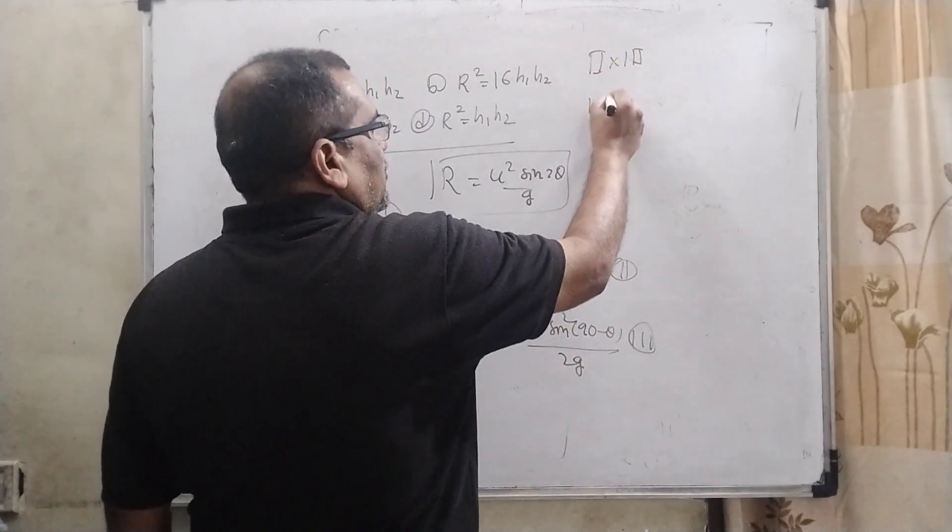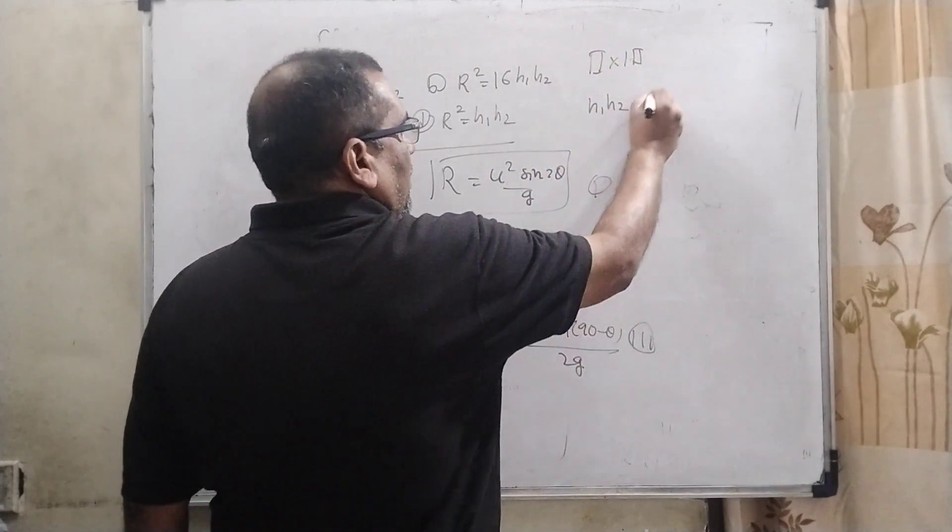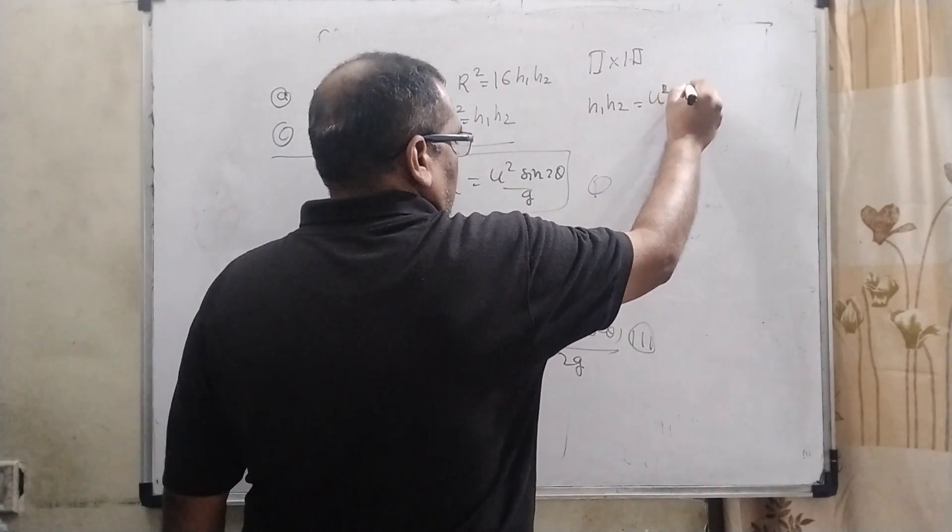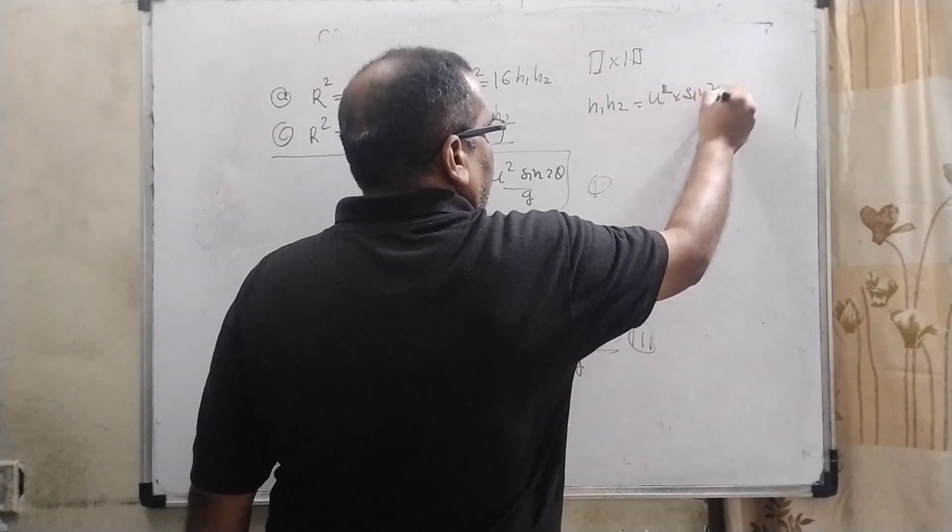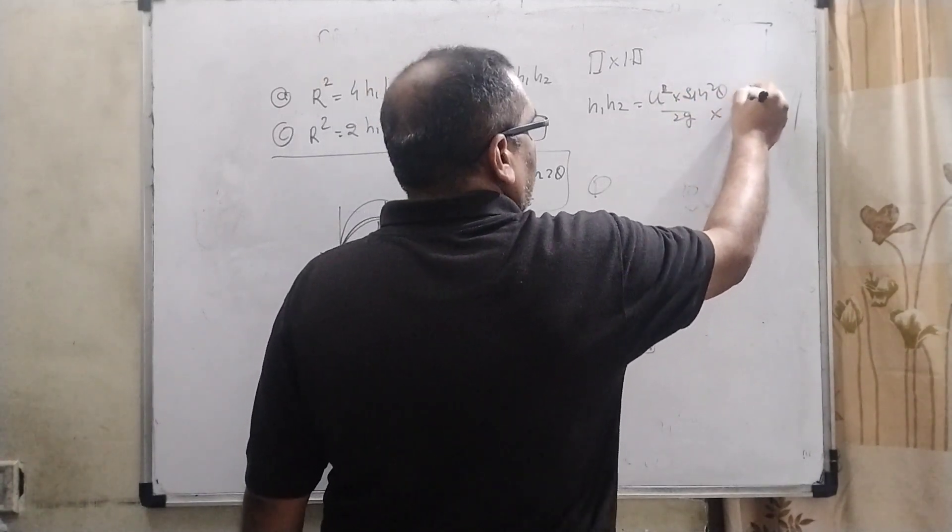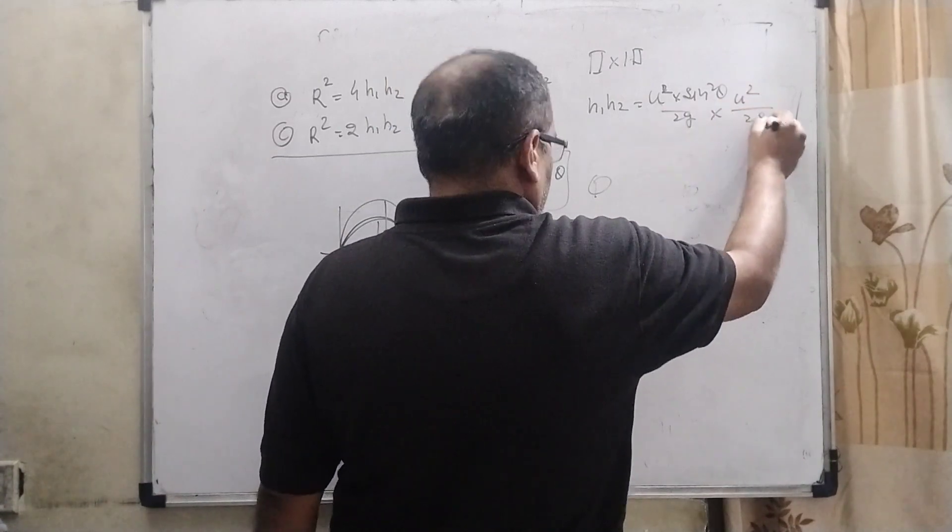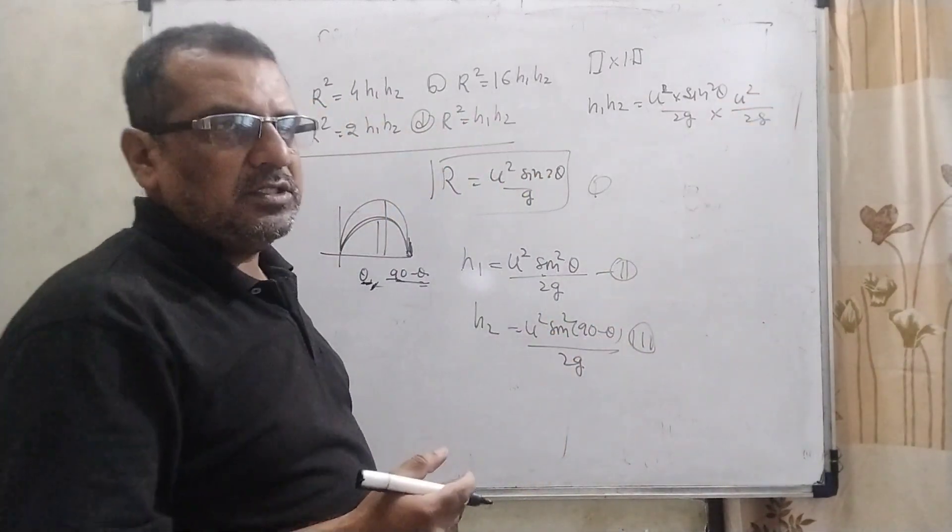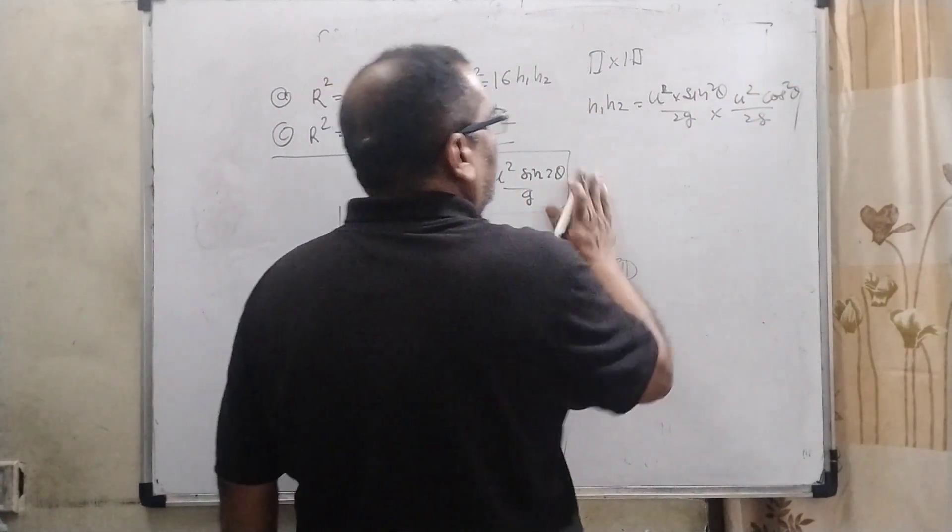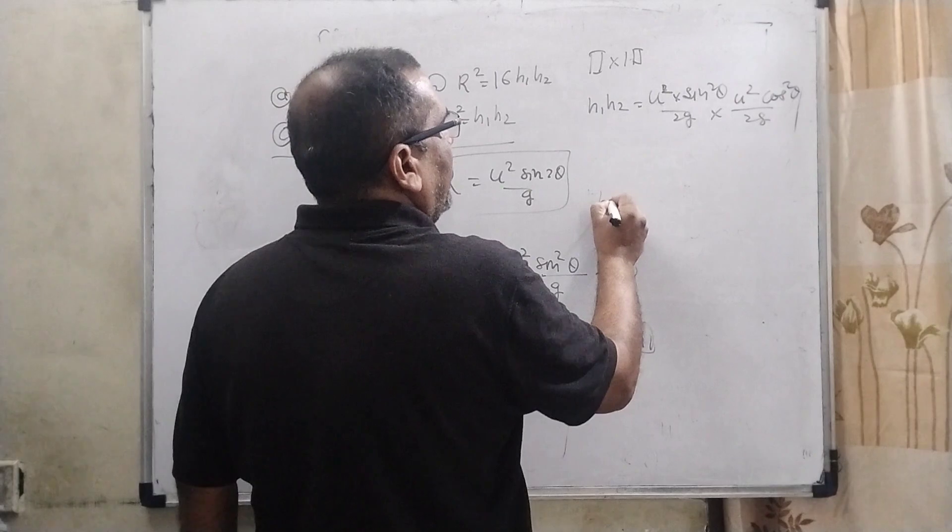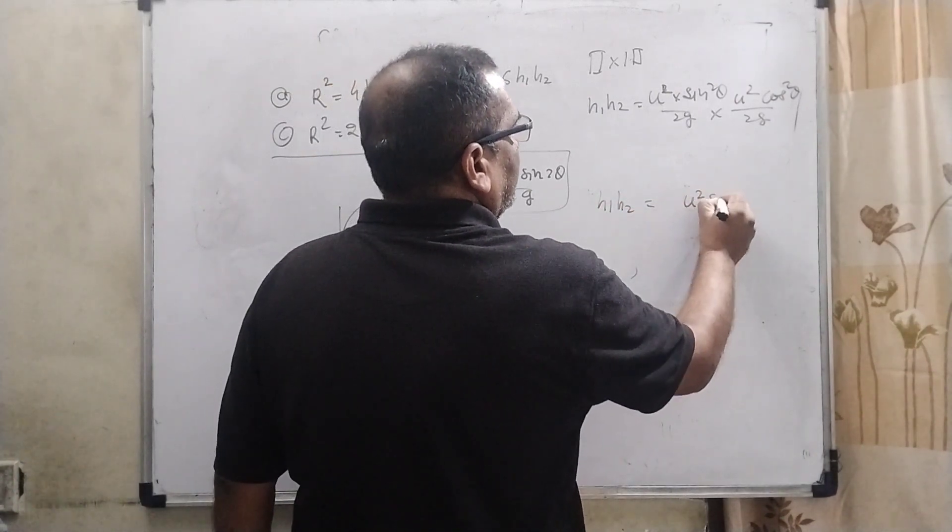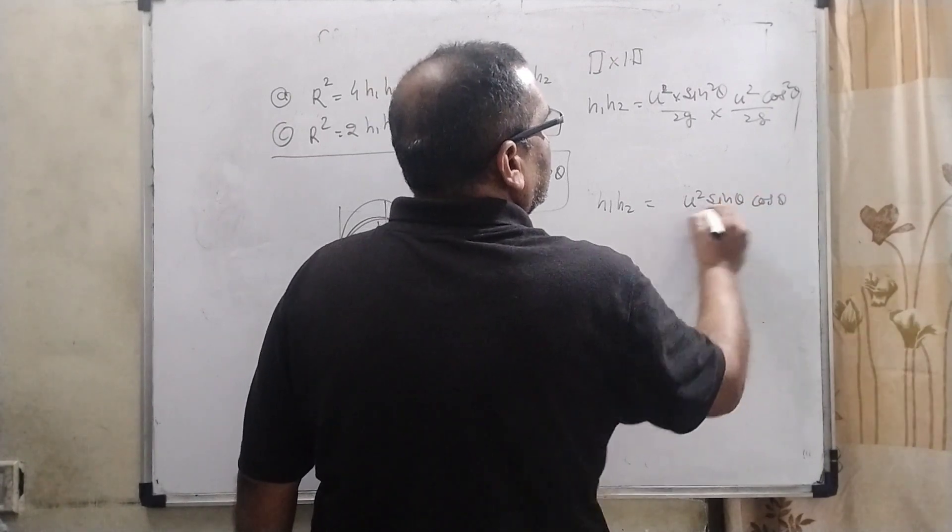u square sine square theta 2g again multiplied by u square 2g then sine 90 minus theta is cos theta so it becomes cos square theta. So rearranging we get h1 h2 equal to u square sine theta cos theta upon 2g whole square.